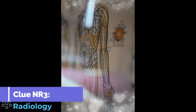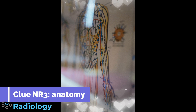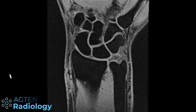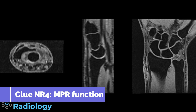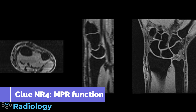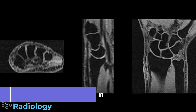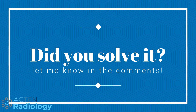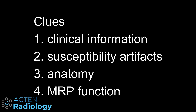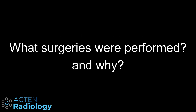Our third clue is that we need to know the anatomy — pretty simple. And our last clue, number four, is a very good one. It might make you think a little bit, but I think this is an exciting trick. You should use the NPR function — I'm not going to say more here. After an absolutely fantastic thinking session, did you solve the case? The questions I need you to answer, ladies and gentlemen, are the following: First, what surgeries were performed in this patient? And second, why?